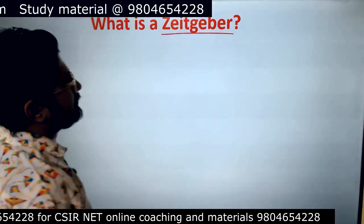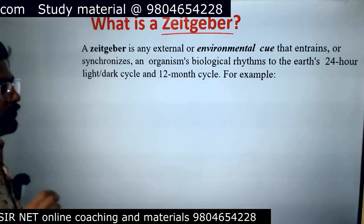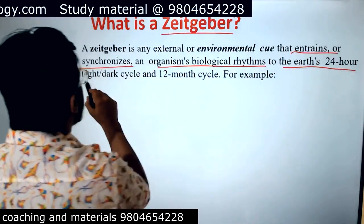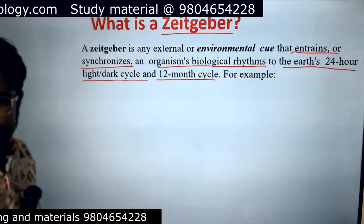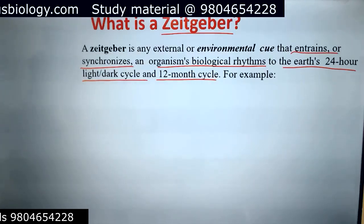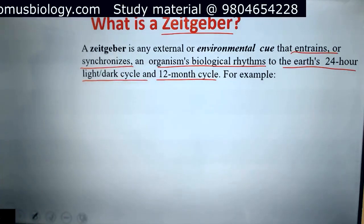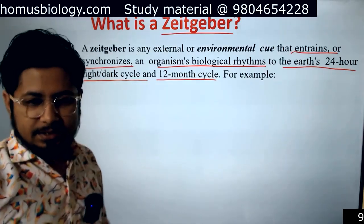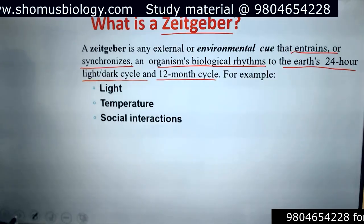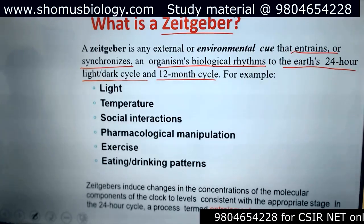Among them, the most important is the Zeitgeber. A Zeitgeber is any external or environmental cue that entrains or synchronizes an organism's biological rhythm to Earth's 24-hour light-dark cycle and 12-month cycle. Examples of Zeitgebers include light, temperature, social interactions, pharmacological manipulations, exercise, and eating and drinking patterns.